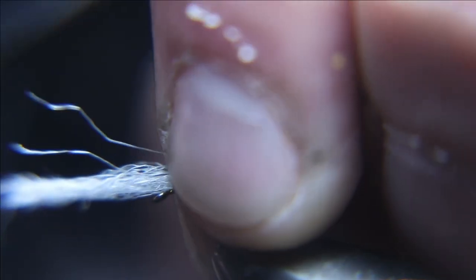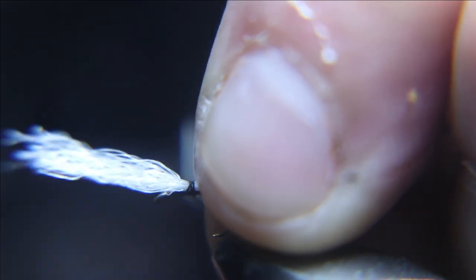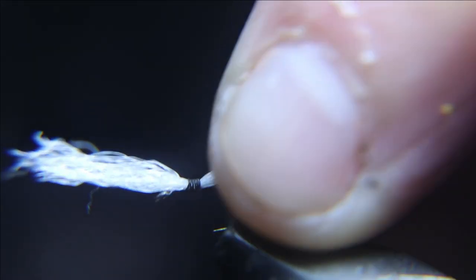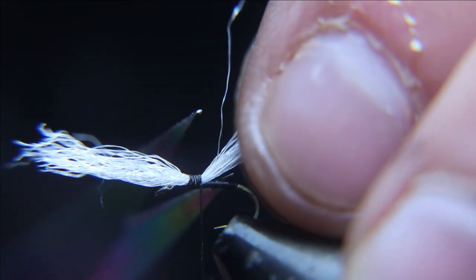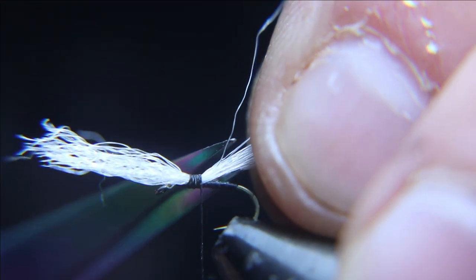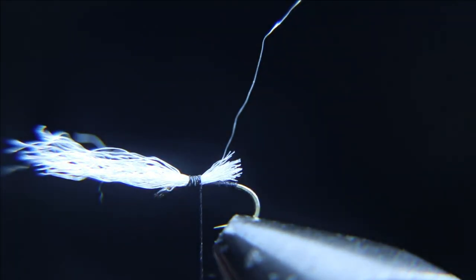So when you start, you tie your wing and you want to be half from the hook and then half of that distance, so one quarter of the hook shank back. You want to tie just a little bit of wing material because this is a really small size 20.